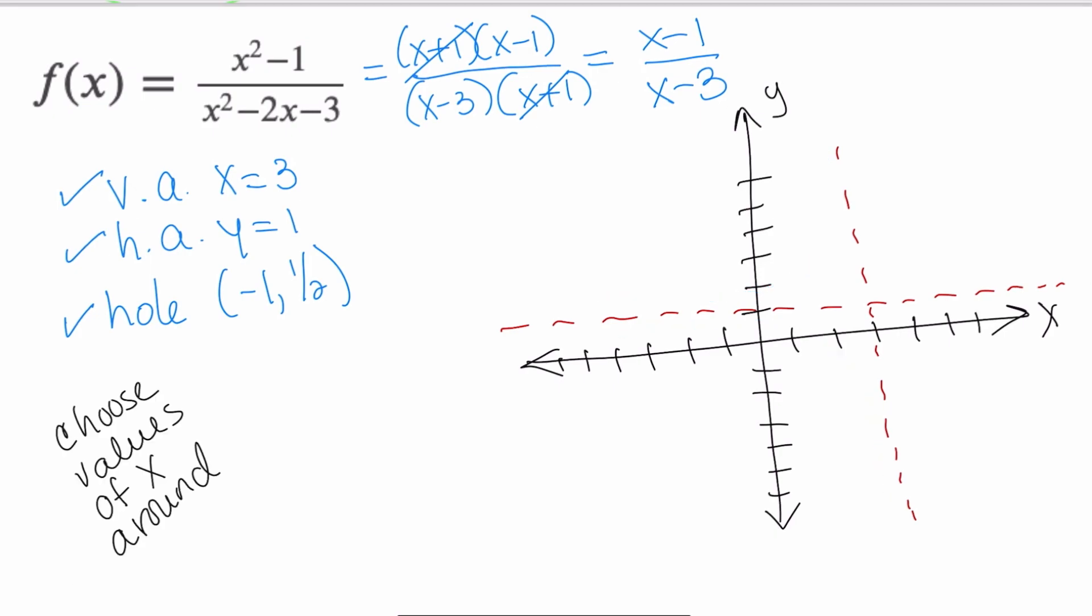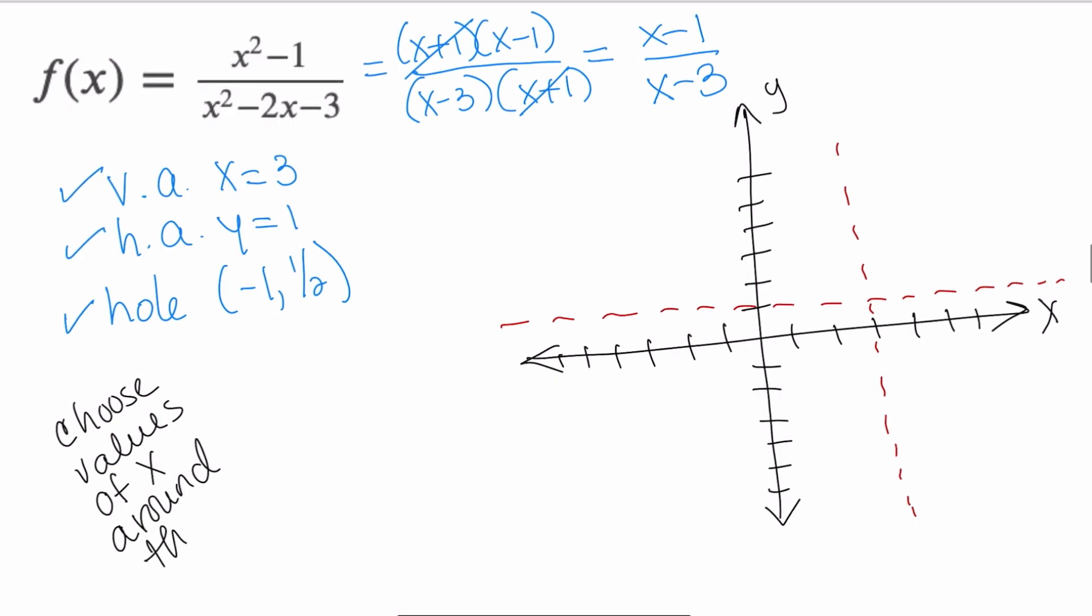So what we're going to do in order to graph is choose values of x around the vertical asymptote. Right now we're lucky because we only have one vertical asymptote. Sometimes we have two or more vertical asymptotes, and so we have to do this in sections.